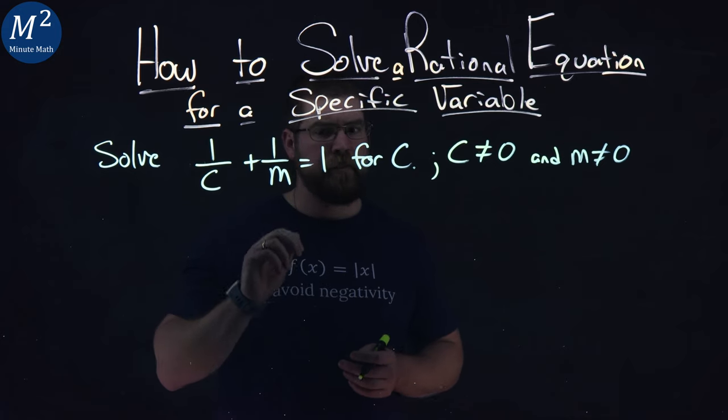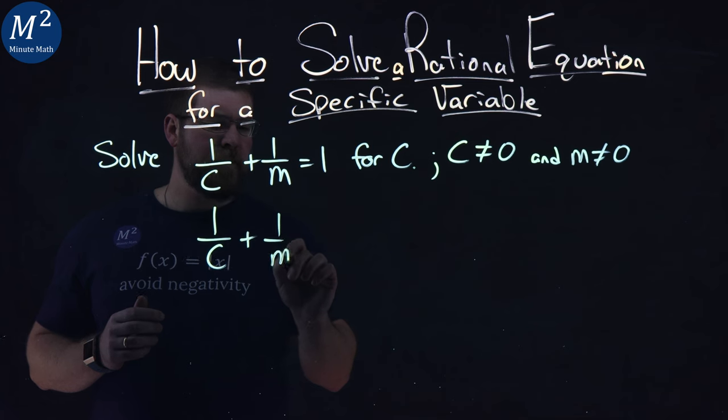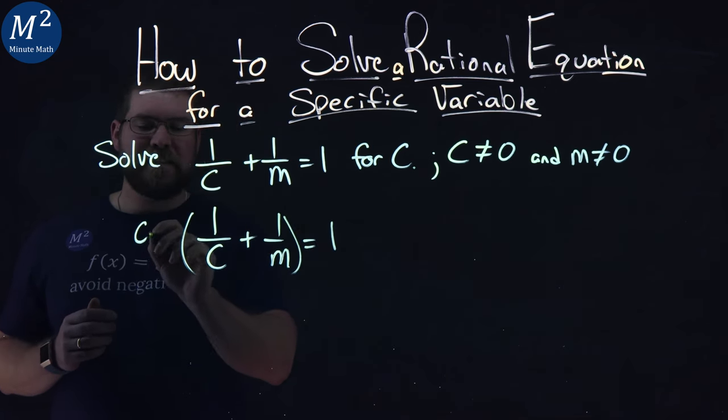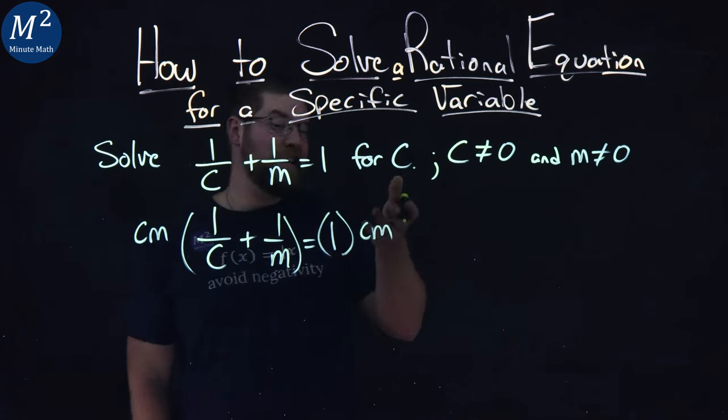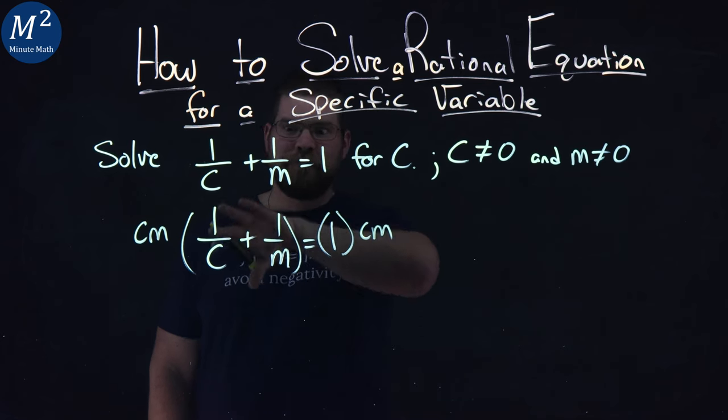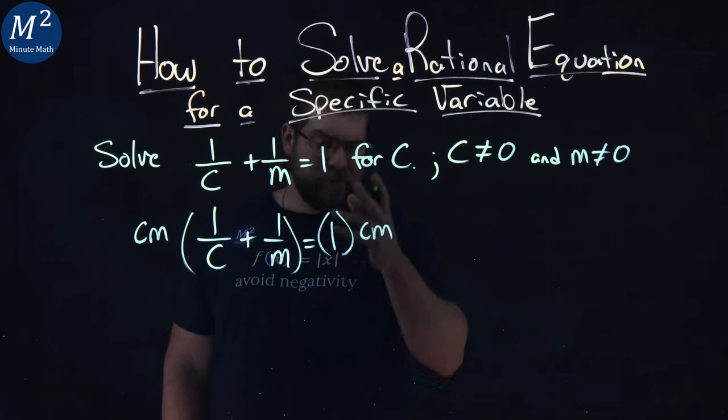So I'm going to rewrite this equation: 1/c + 1/m = 1, and I'll multiply both sides by cm. This is a common technique to really get things out of the denominator that you're looking for. Once you have it down, it's very helpful.